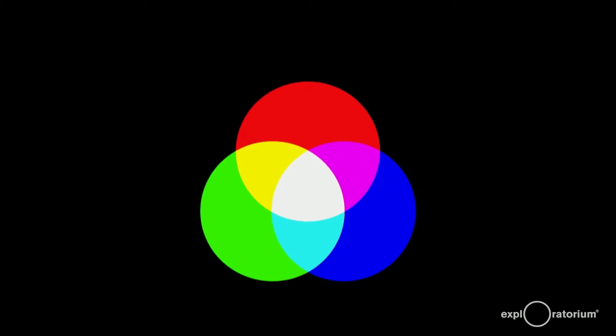Finally, when you mix all three colors of light, where they all overlap in the center, you get white. Red plus green plus blue makes white.